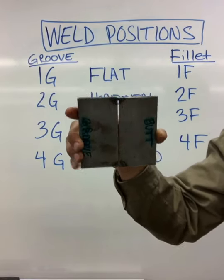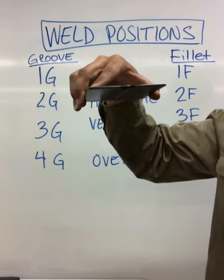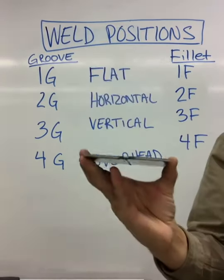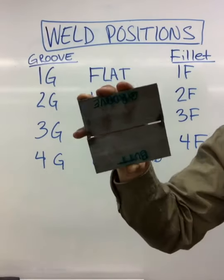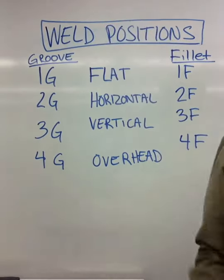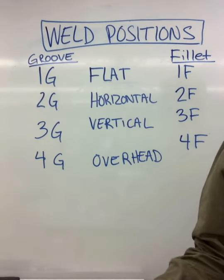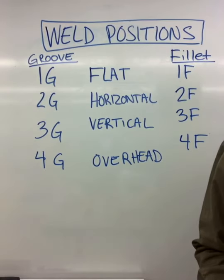And finally, you're going to have 4G as your overhead. So 1G, 2G, 3G, and 4G. That wraps up weld positions for plate and sheet metal. This does not include pipe welding.